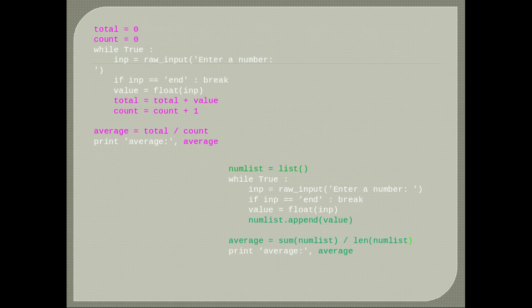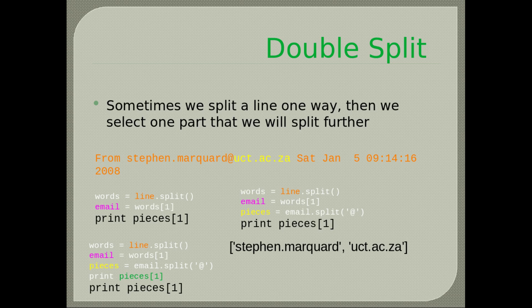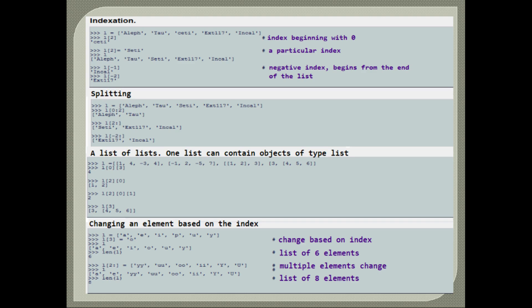Here are two ways of finding the average of numbers, both accepting user input. The first adds the value to a variable then divides by the count. The second adds each input to a list, then performs sum() divided by len(). Double split: sometimes we split a line one way then select one part to split further — for example splitting an email address at the @ sign to get the host name, also known as the domain.